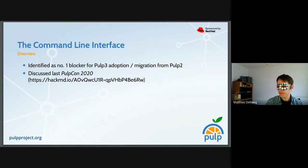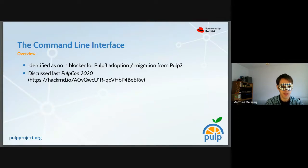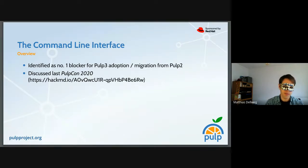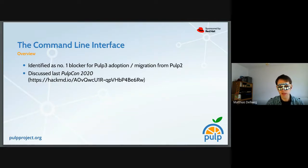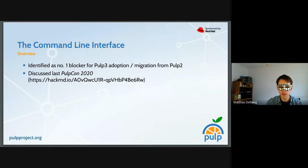The PULP CLI was identified to be the number one blocker for PULP Core 3 adoption in the field, or migrating from PULP Core 2, because PULP Core 2 had a command line interface to interact with it. This is not so much for downstream products that integrate with PULP Core because they talk to the REST API themselves. But for people using PULP Core directly, using the REST API is very tedious. On multiple surveys, this was identified as a blocker for not migrating or not even thinking about adopting PULP Core.